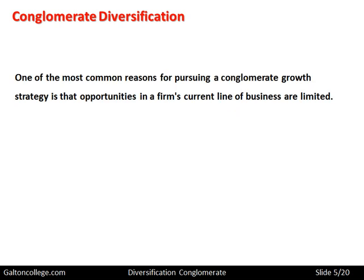One of the most common reasons for pursuing a conglomerate growth strategy is that opportunities in a firm's current line of business may be limited. So it may be forced to look for another business because there are limited opportunities in the existing one — perhaps the market is small or restricted, it can't grow, it can't access raw materials or skilled labour, or the industry may be in decline.